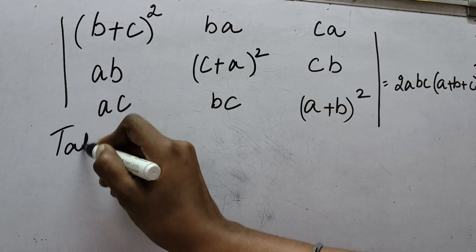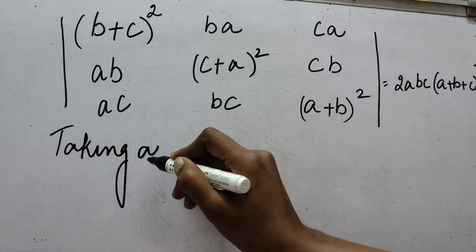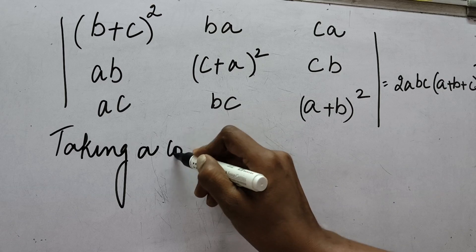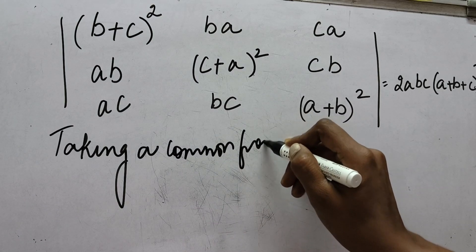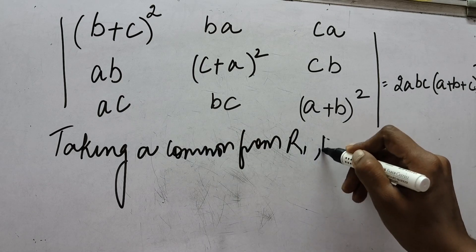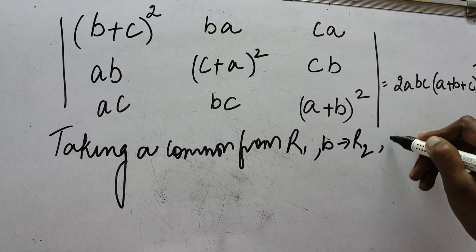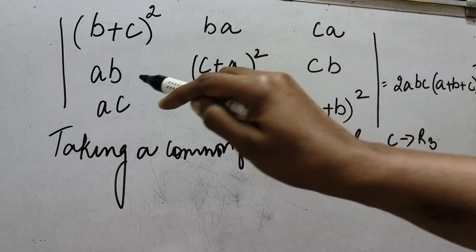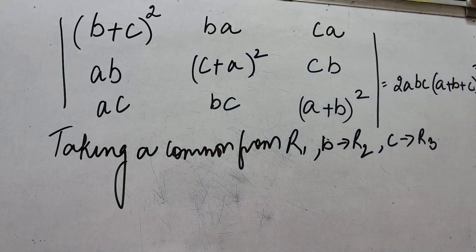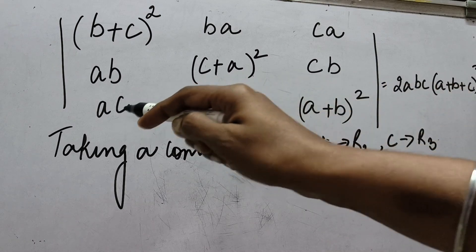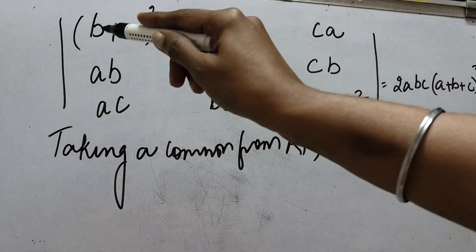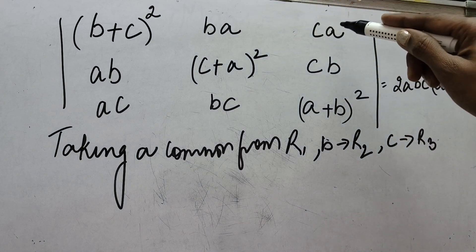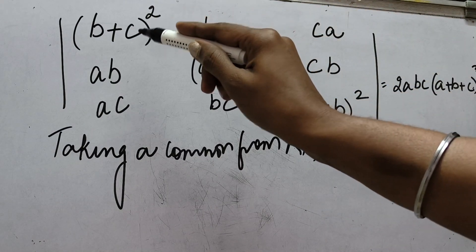First of all, I am going to take a common from row number 1, then b common from row number 2, and then c common from row number 3. From the first row I will be taking a common because a is there. From the second row b is there, I can take it common, and from the third row I can take c common because c is there.